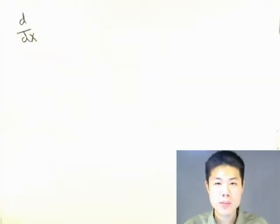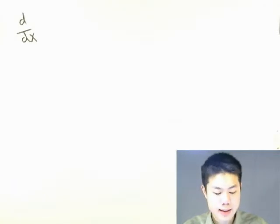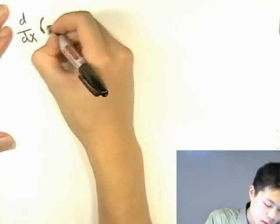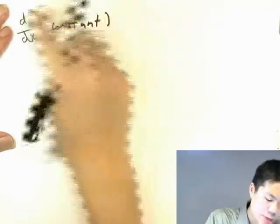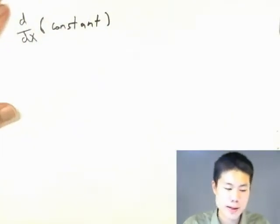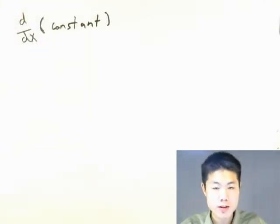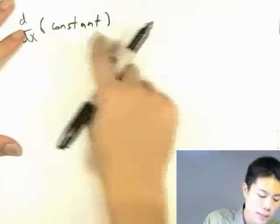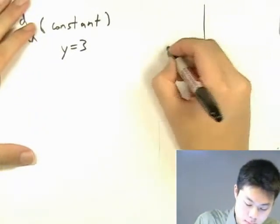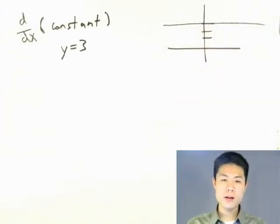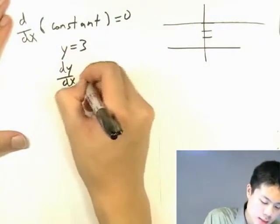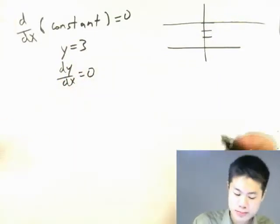So d over dx is another way of saying 'take the derivative.' If we take the derivative of a constant with respect to x — for example, y equals 3, which is just a horizontal line — the slope of a horizontal line is 0. So taking the derivative of a constant is equal to 0. dy over dx equals 0.